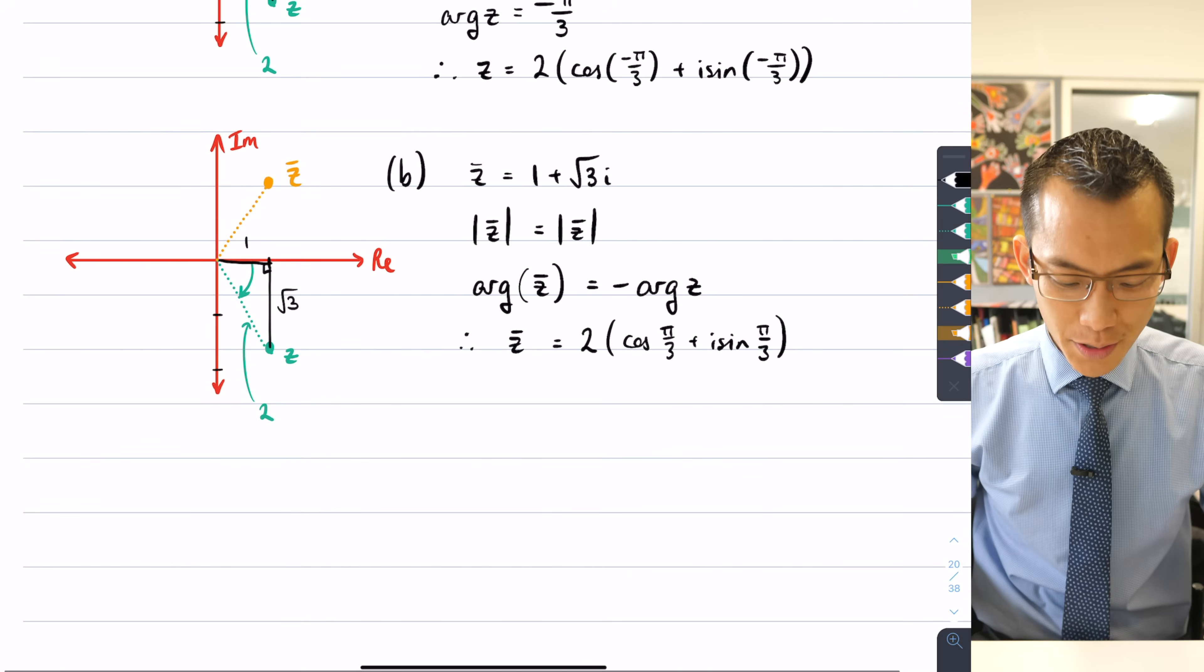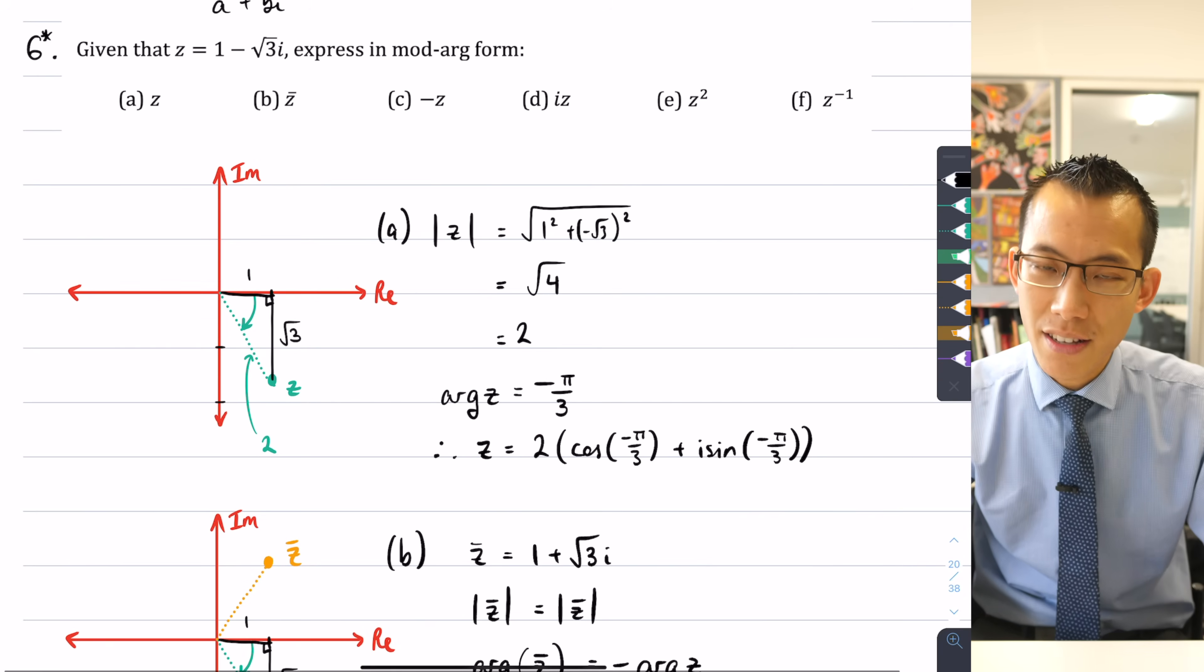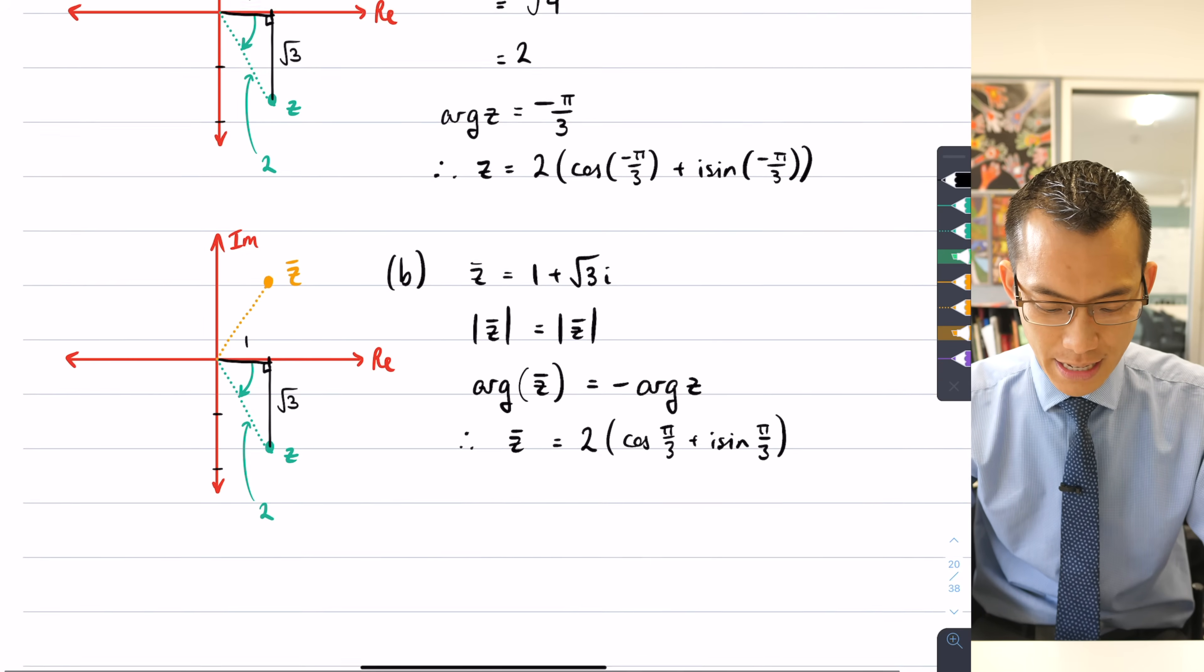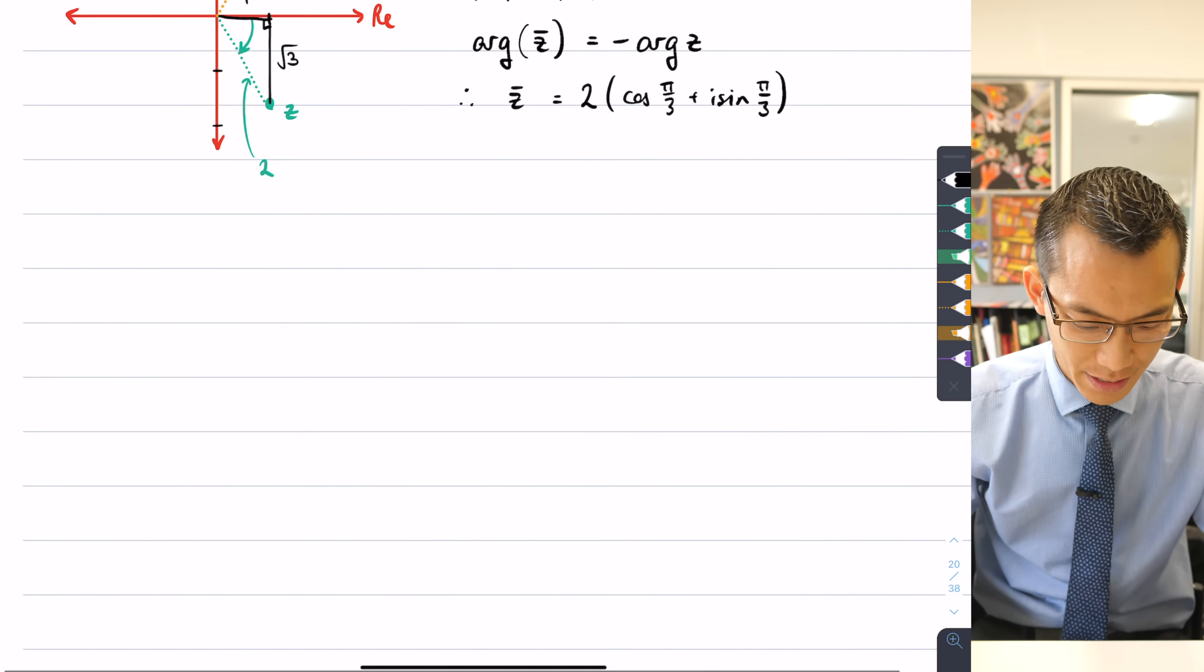Okay, so far so good. So there was the original number, there was the modulus. Now let's have a look at part c, -z, negative z.